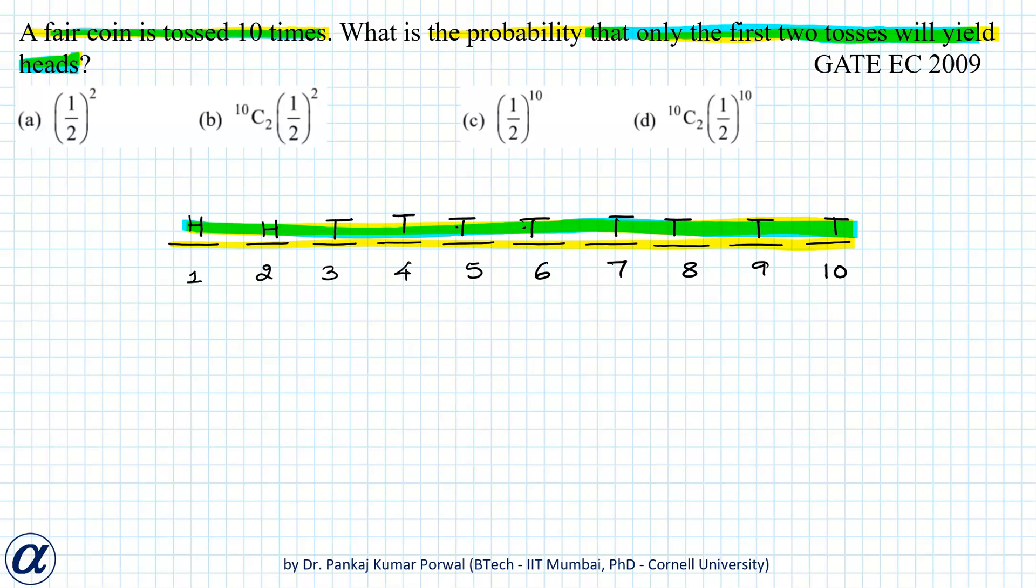Now I will write the probabilities for each individual toss. In the first toss we get head and probability of getting head is 1/2. In the second toss we get head and that probability is also 1/2. In the third toss we get tail and the probability of getting tail is also 1/2, and so on for all the tosses.